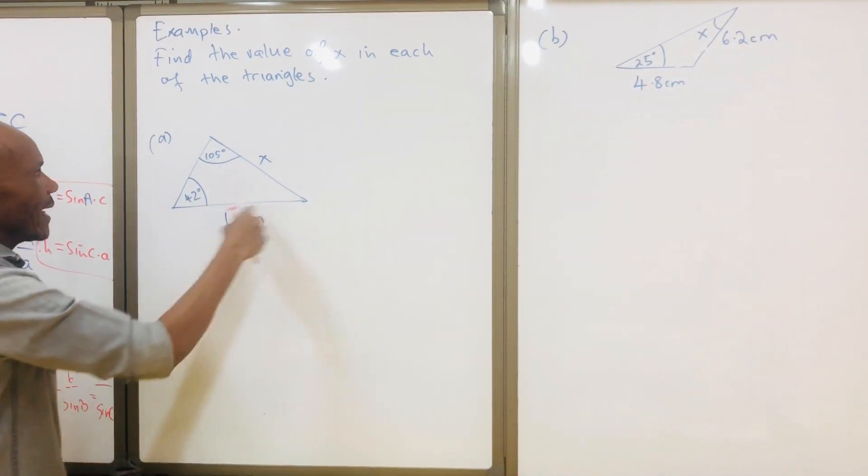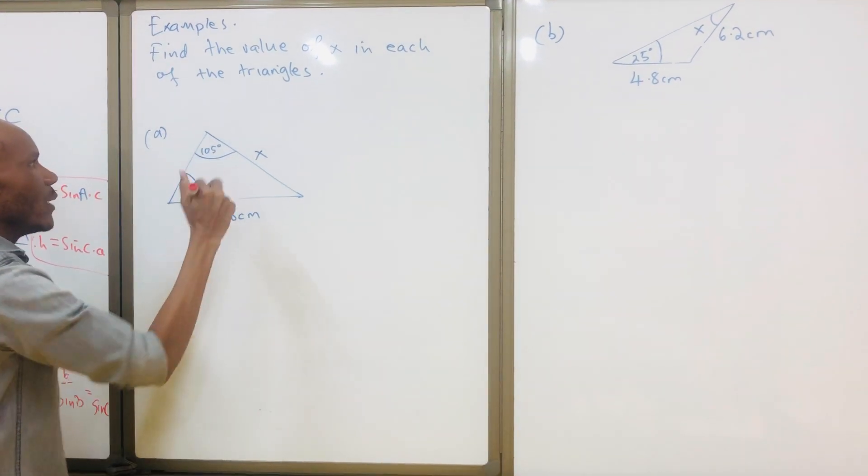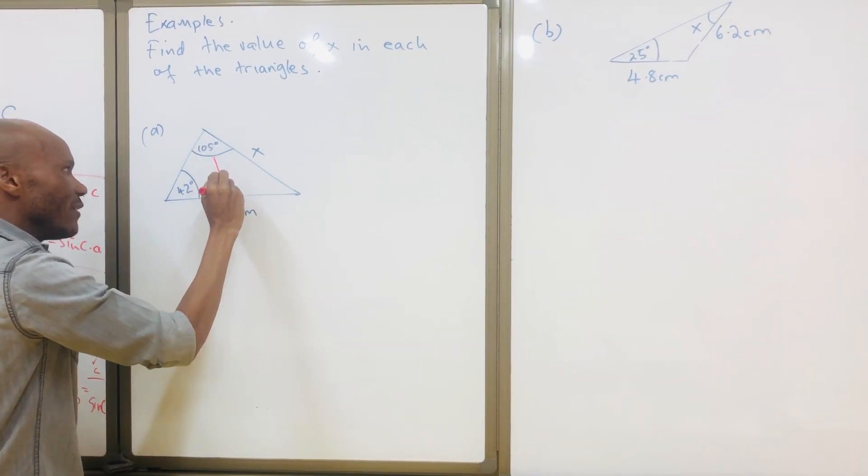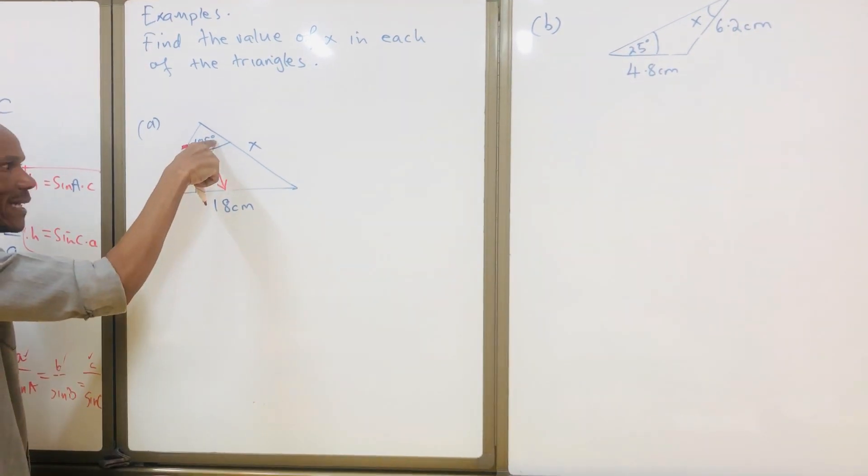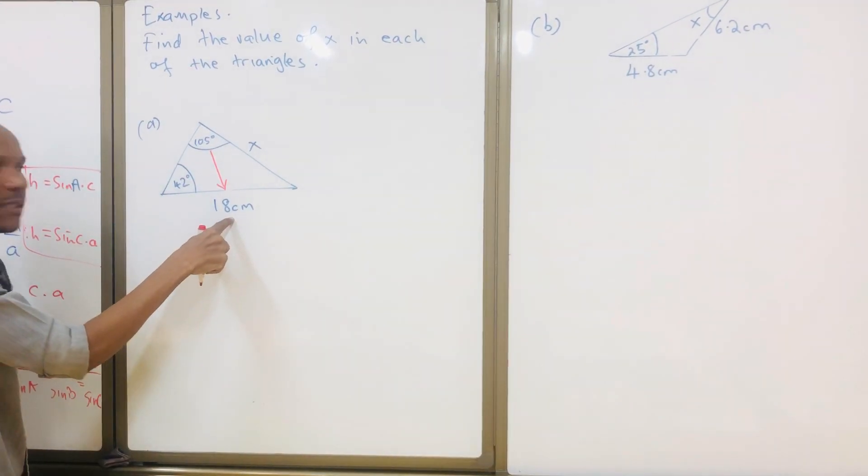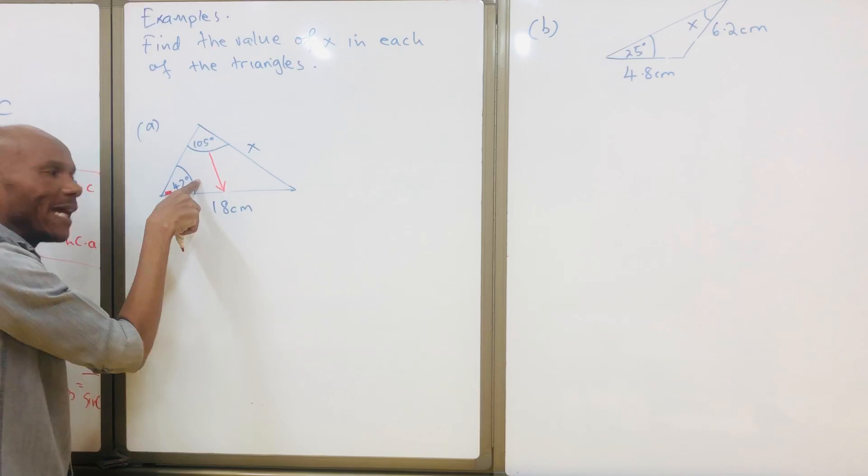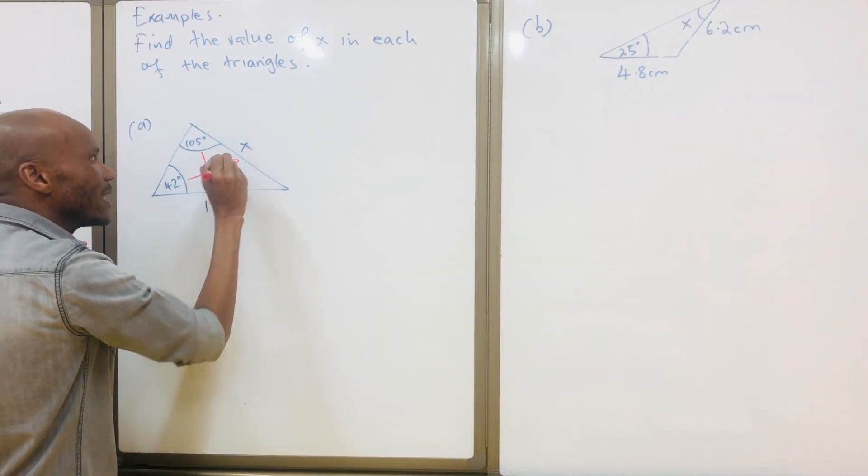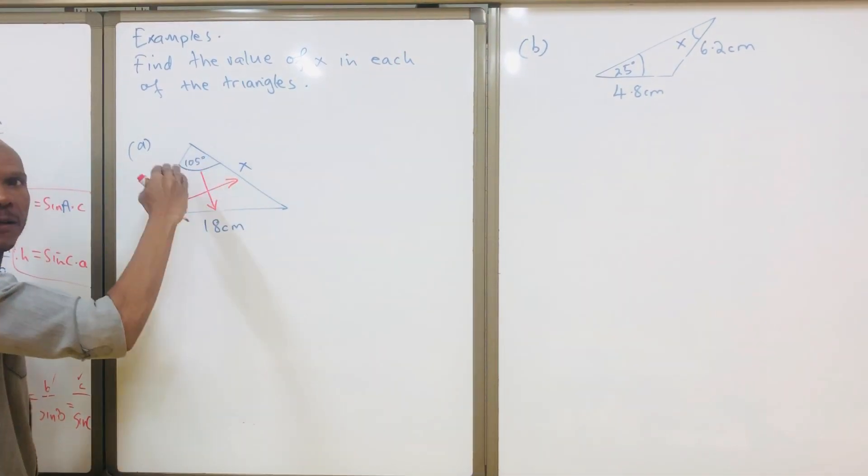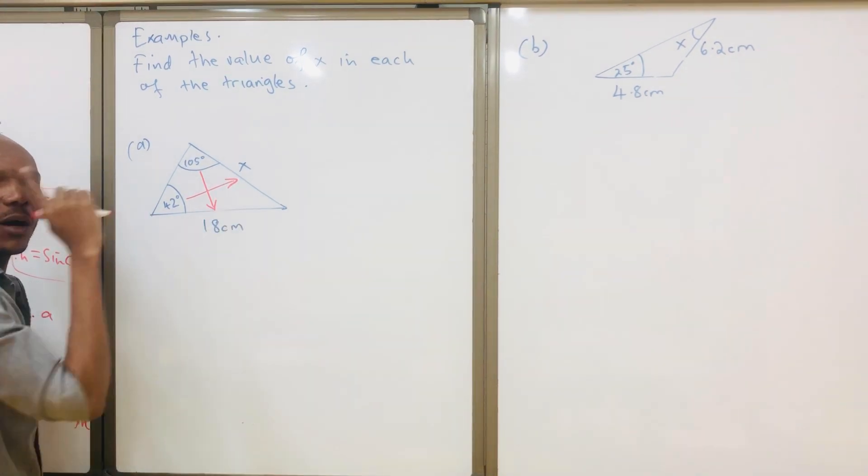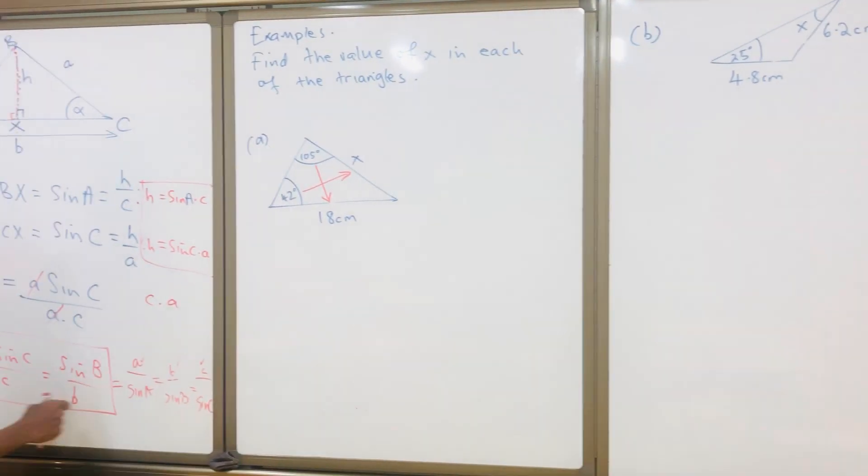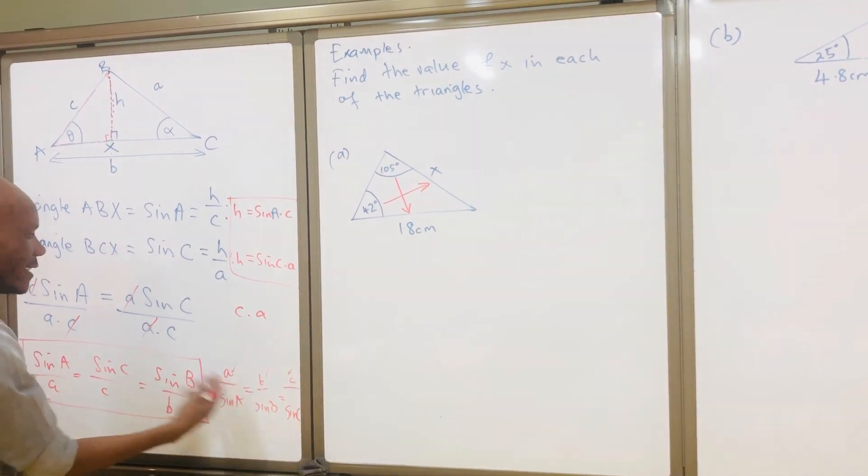So here I have a triangle like this. Every time you are given a triangle where you are given an angle and an opposite side, look at the crisscross. Here the opposite side is not there, so I can use my sine rule. All I need is just three of these or three of that.